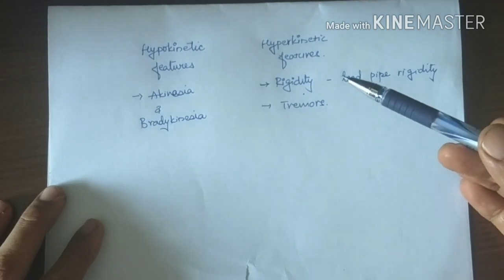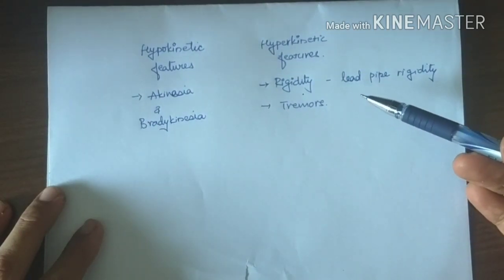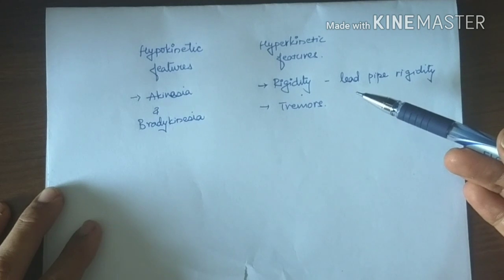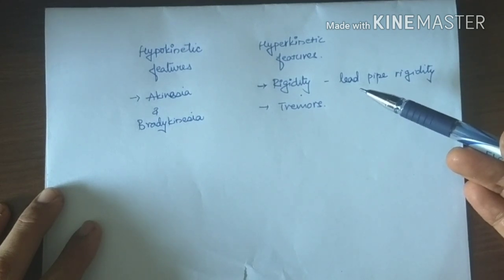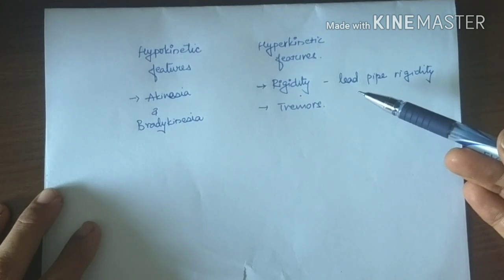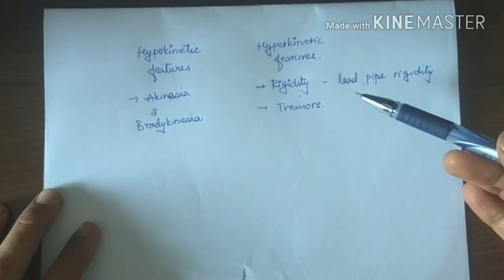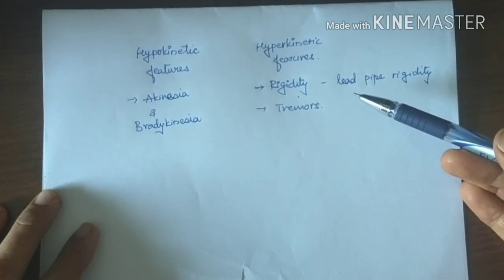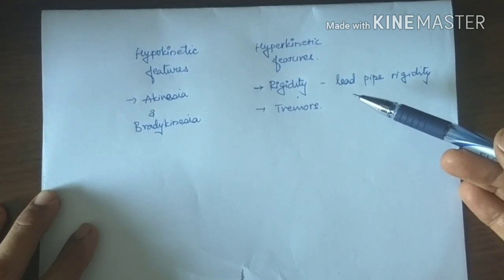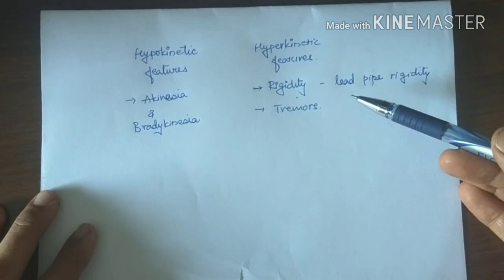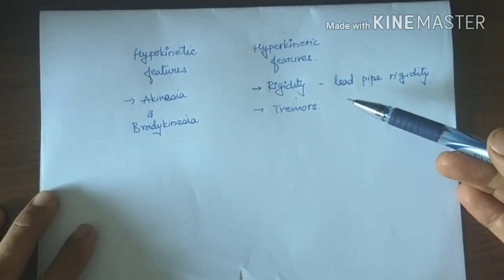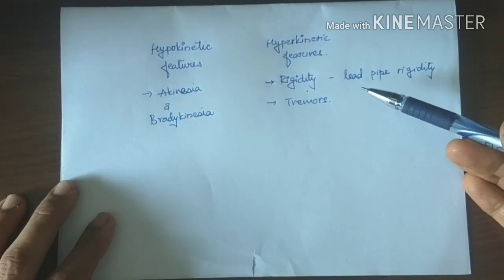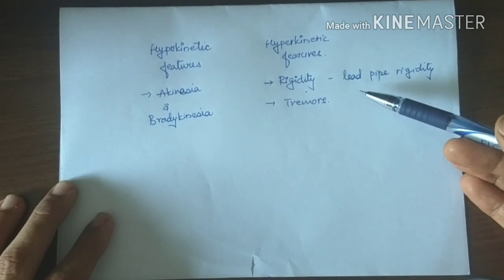In hyperkinetic features, there is rigidity. Lead pipe type of rigidity is observed. Rigidity is different from spasticity because in rigidity there is increased motor neuronal discharge to both agonist as well as antagonist muscles. The rigidity is known as lead pipe rigidity because the resistance is felt like we are bending a lead pipe while performing passive movement. Sometimes there is a series of catches present during passive movement, which is known as cogwheel rigidity. But there is sudden loss of resistance seen in the spastic extremity that is absent here.